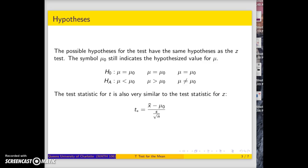Just like the z-test, we have three different alternative hypotheses: less than, greater than, and not equal to. The null hypothesis is always equal to the hypothesized value.